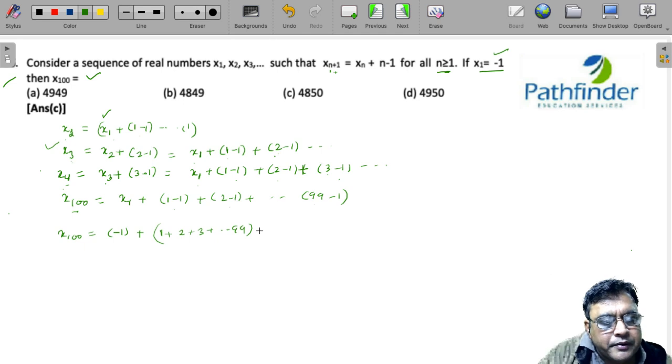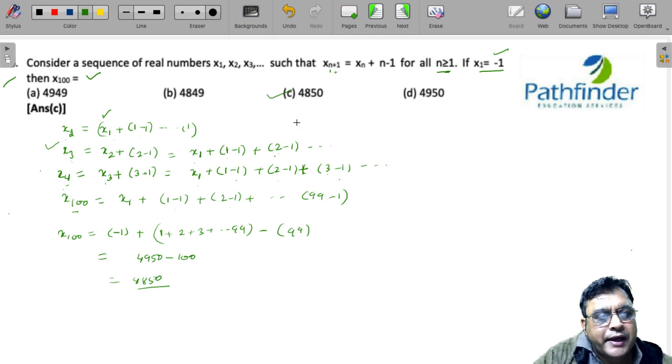Minus, you have how many times 1? You have 99 times 1 because these are 99 brackets, so minus 99. What do you get? 1 + 2 + 3 till 99 will be 4950 - 100 should give you 4850 as your answer.